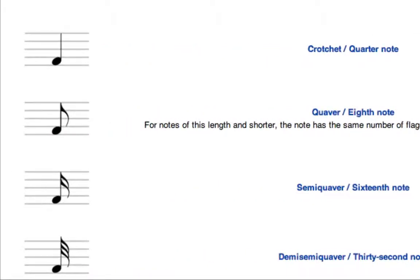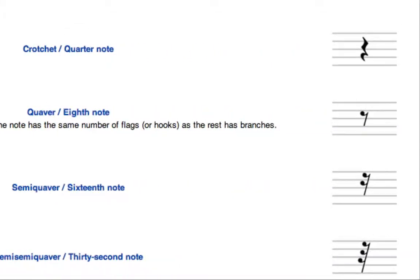The final image on the bottom left hand side is a thirty-second note, and it's going to look exactly like a sixteenth note just with an additional flag. The same rules apply where two thirty-second notes equals one sixteenth note and so on. The last image on the bottom right hand side is a thirty-second rest, which looks exactly like a sixteenth rest with an additional branch below it. Two thirty-second rests equals one sixteenth rest, and two sixteenth rests equal one eighth rest, and so on and so forth.